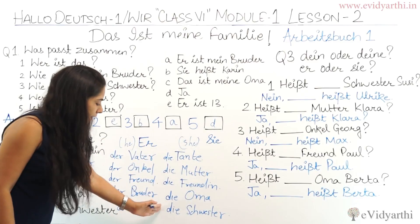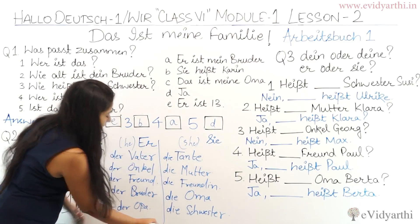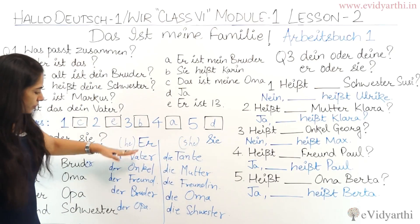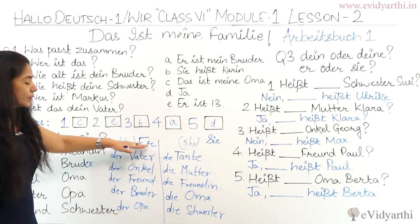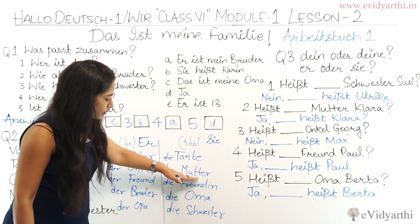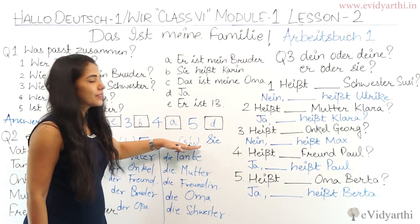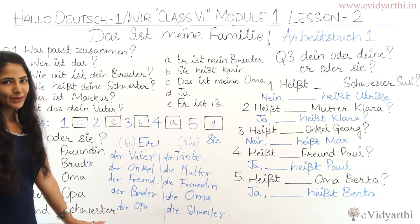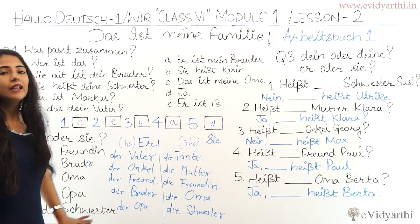Here we have made a list. With 'Vater,' 'Onkel,' 'Freund,' 'Bruder,' and 'Opa' we use 'er' — he. And with 'Tante,' 'Mutter,' 'Freundin,' 'Oma,' and 'Schwester' we use 'sie' — she. Because these are feminine and those are masculine.